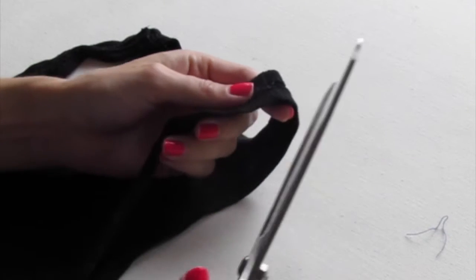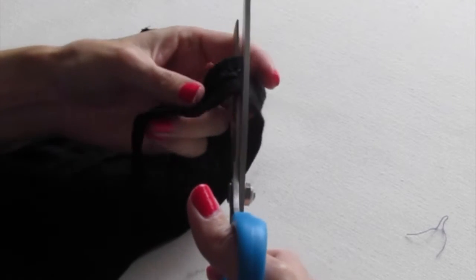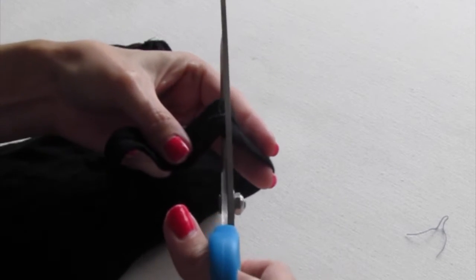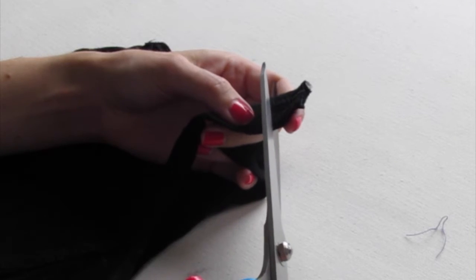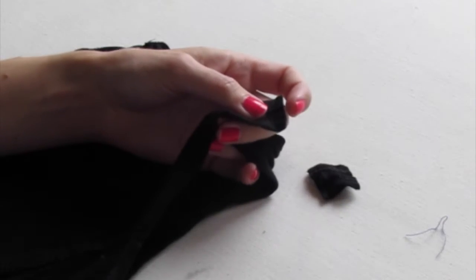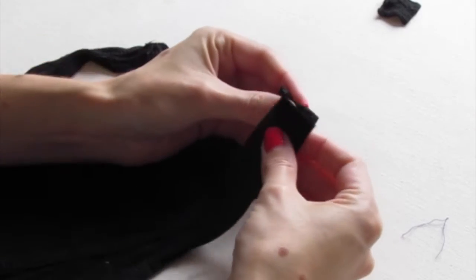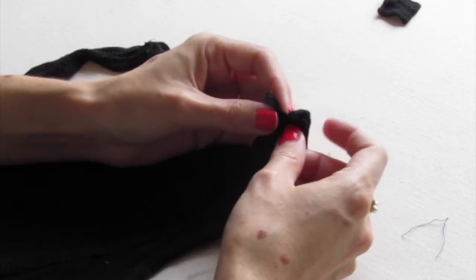So we're going to take one of the tank top straps and cut it at the seam of the shoulder. Cut off the amount of fabric you want off the straps and keep that. And now all we're going to do is sew the strap back together.